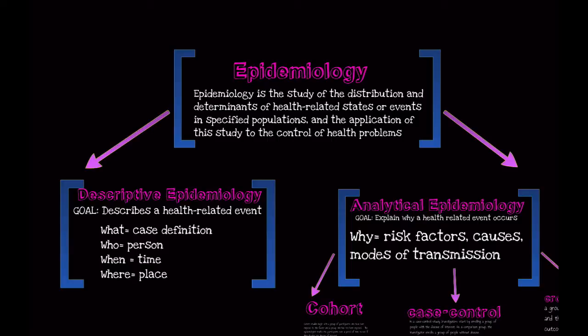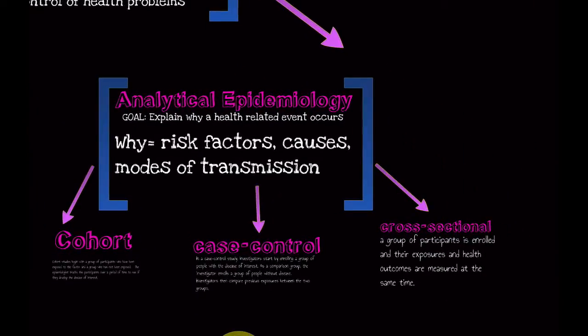Here, our goal is to explain why a health-related event occurs. Many times it looks at the risk factors, causes, and modes of transmission. There are three main types of analytical studies: cohort studies, case control, and cross-sectional. Today, we'll look at each of those and apply them to a situation.